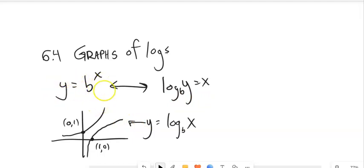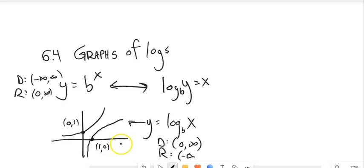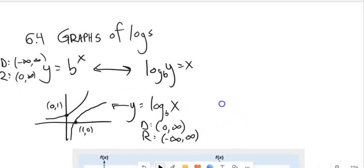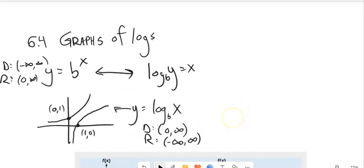If I think about y equals b to the x, the domain is anything, negative infinity to infinity, and the range is anything bigger than 0. And if this is just the reflection of that, the domain and the range basically switch. So the domain of this is 0 to infinity, and the range is anything, negative infinity to infinity.